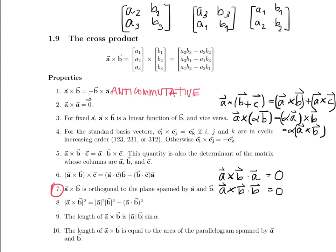Property 9: The length of A crossed with B is equal to the area of the parallelogram spanned by A and B. If I have two vectors A and B, they span a parallelogram because I can translate B to one side of A, and translate A to the other side of B, creating a full parallelogram. So the length of the cross product equals the area of this parallelogram. You can see why the formula with sine alpha corresponds to the area of the parallelogram from geometry.